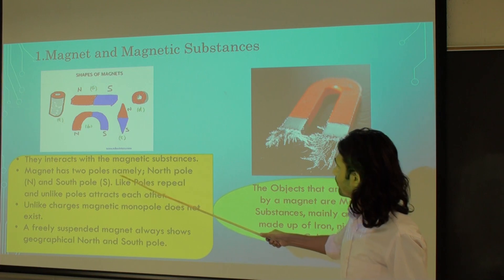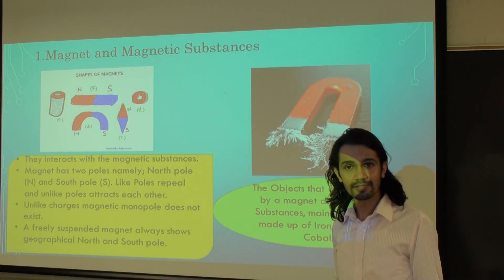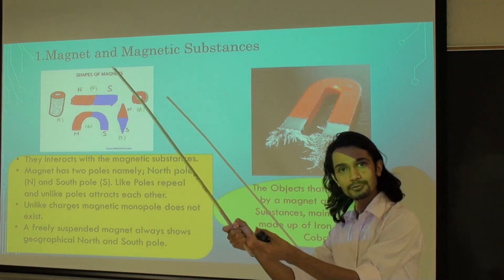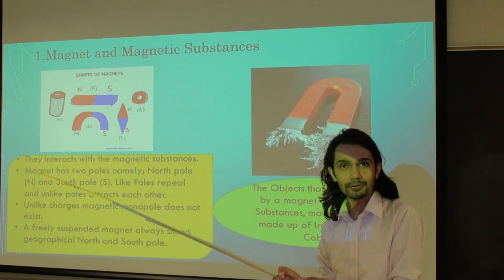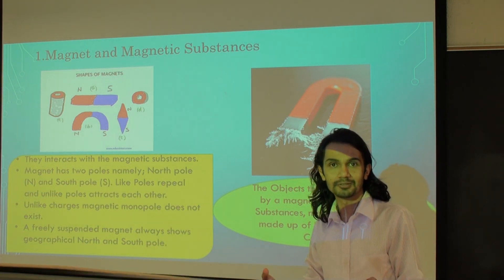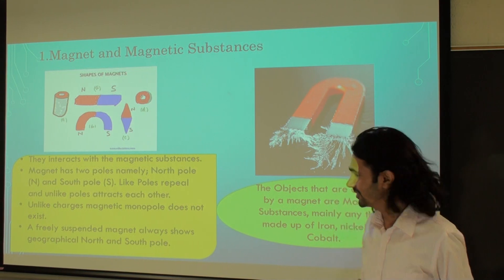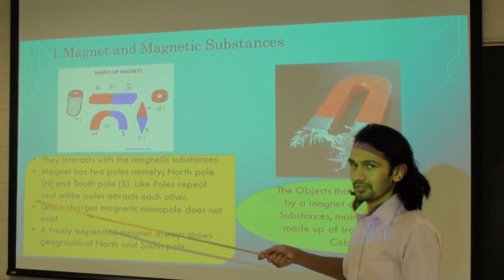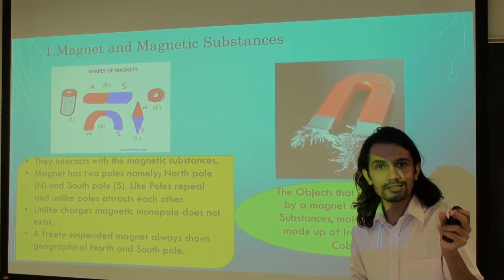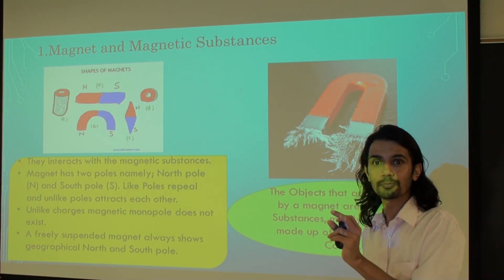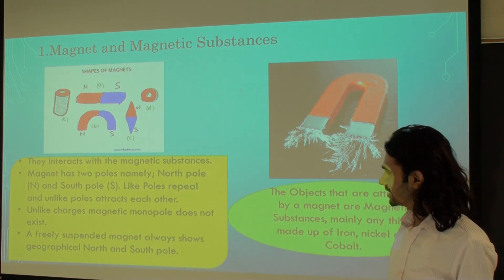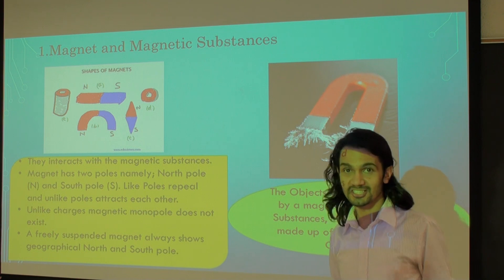Magnets have some special properties — they attract magnetic substances like iron and nickel. A magnet has two different poles, namely the north pole and the south pole. If we bring two magnets together with the same poles, they repel each other. On the other hand, opposite poles have the property of attraction — they attract each other.